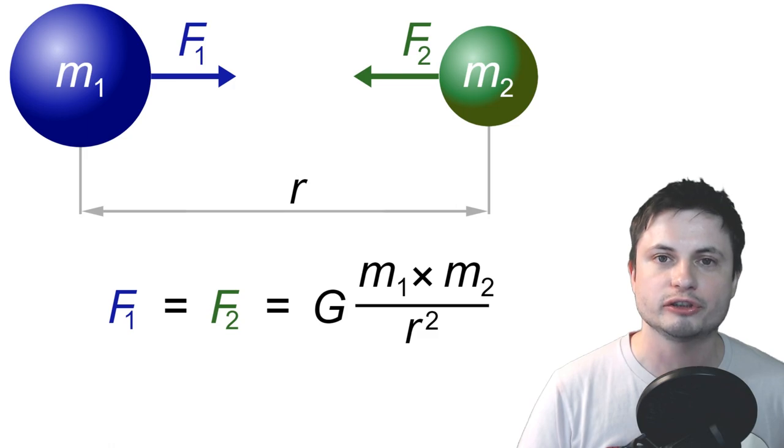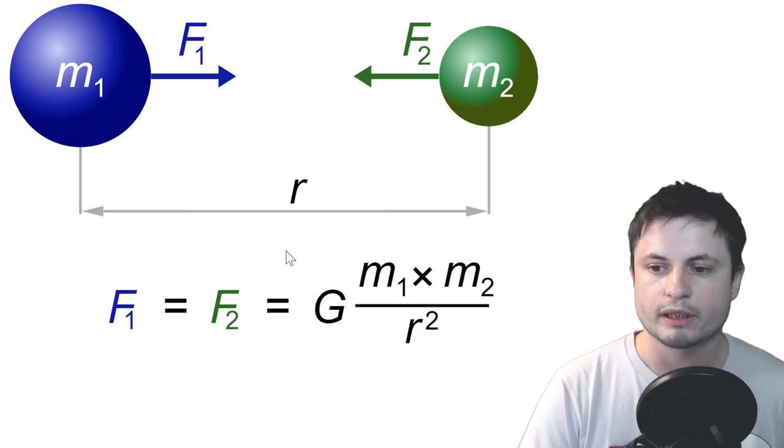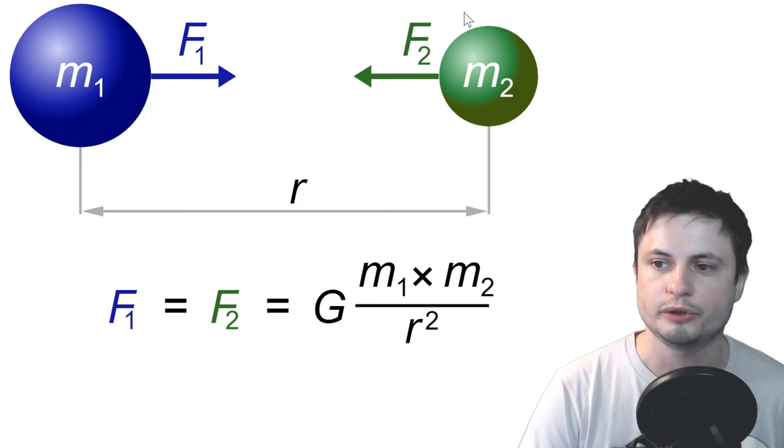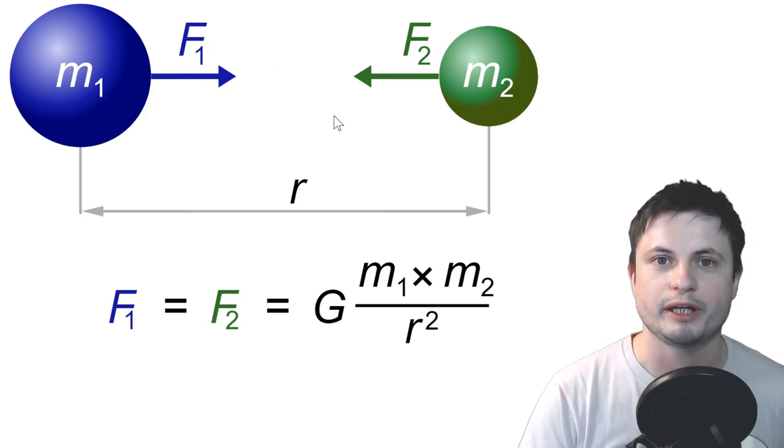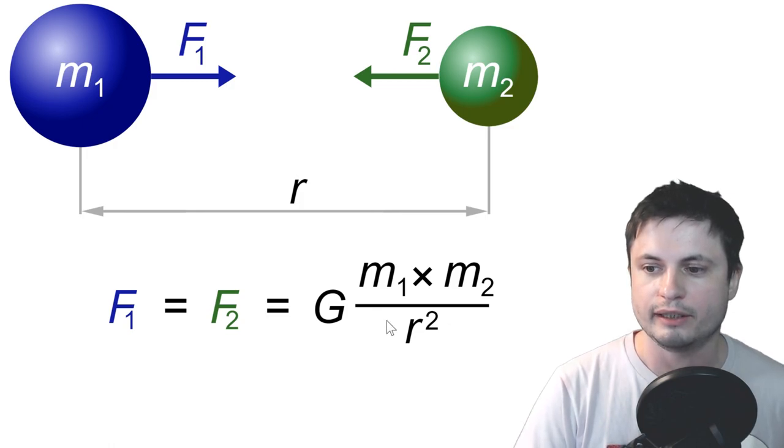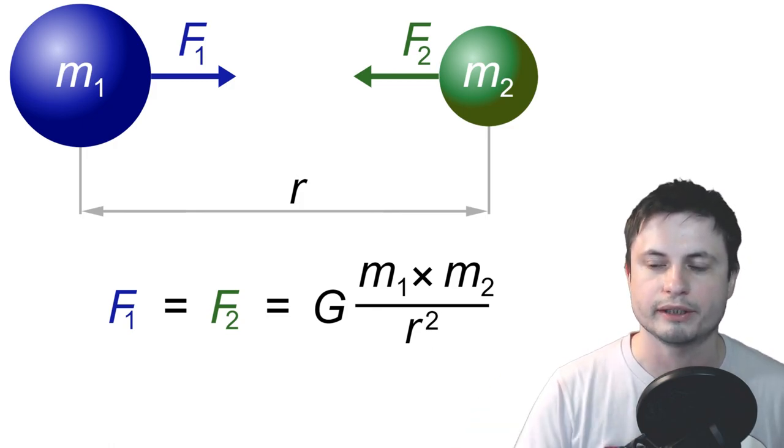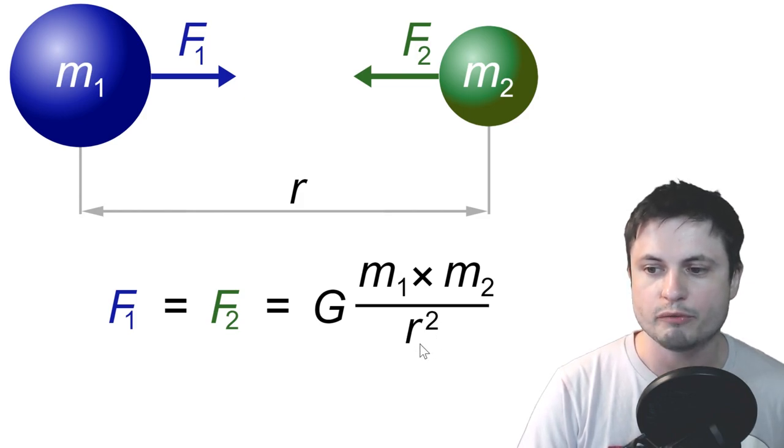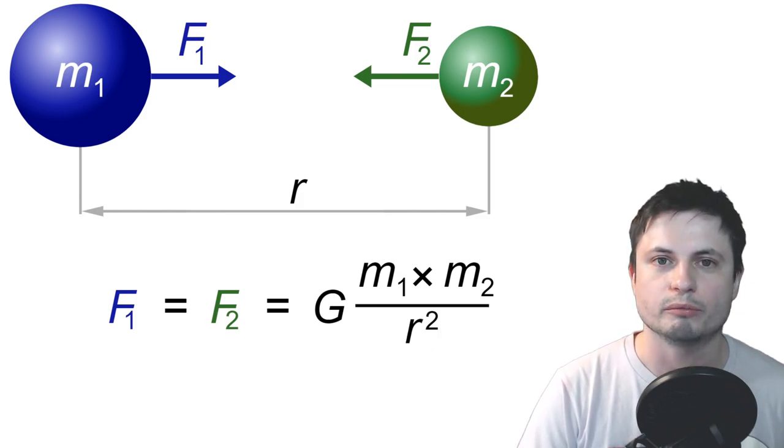This equation here shows us how much force is created by two bodies of two different masses and how much force they actually create between each other. And the less distance there is between them, the more gravitational force is created. Now at some point, what if you make this r zero?